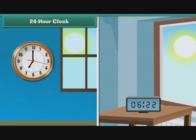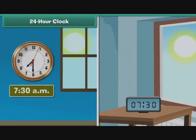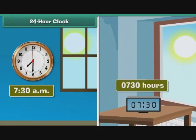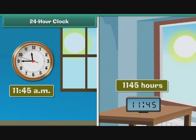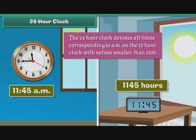Both the 12-hour and 24-hour clocks denote the first 12 hours of the day in an identical manner. 7:30 a.m. on the 12-hour clock is represented as 0730 hours on the 24-hour clock. Similarly, 11:45 a.m. is represented as 1145 hours. The 24-hour clock denotes all times corresponding to a.m. on the 12-hour clock with values smaller than 1200.